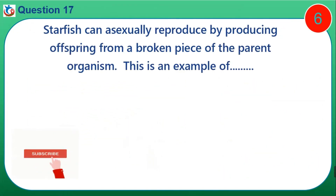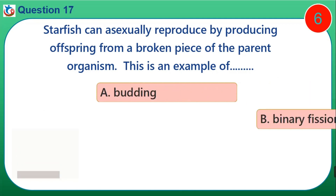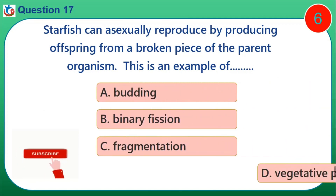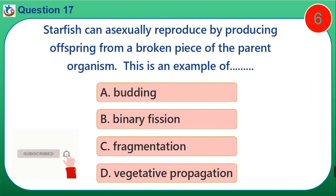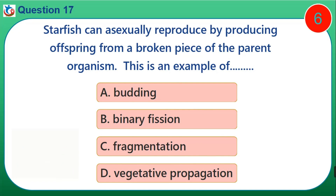Question 17. Starfish can asexually reproduce by producing offspring from a broken piece of the parent organism. This is an example of: A. Budding. B. Binary fission. C. Fragmentation. D. Vegetative propagation.